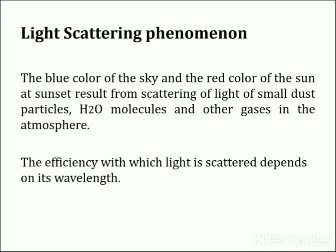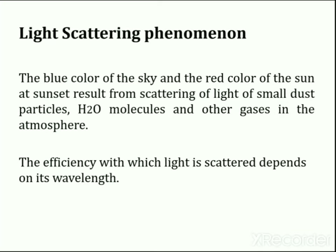We can understand the phenomenon of light scattering by the fact that the blue color of the sky and the red color of the sun at sunset result from scattering of light by small dust particles, water molecules, and other gases present in the atmosphere. In this case, the efficiency with which light is scattered depends on the wavelength of radiation.